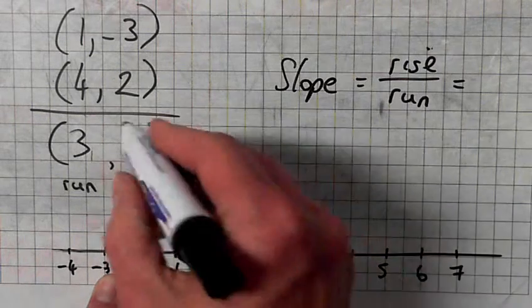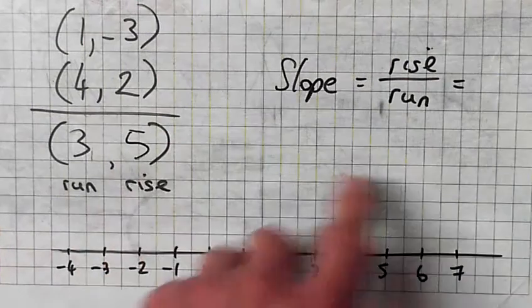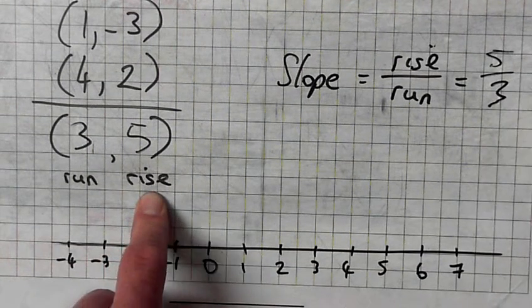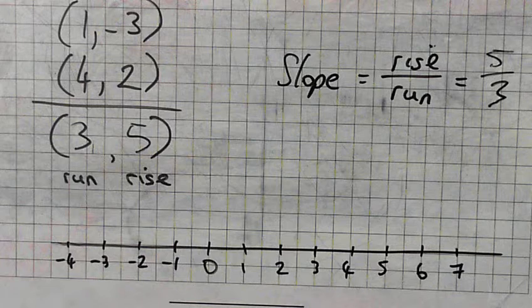I can't see. How do you write your answer? Rise? 5 over 3, which is 1.6.